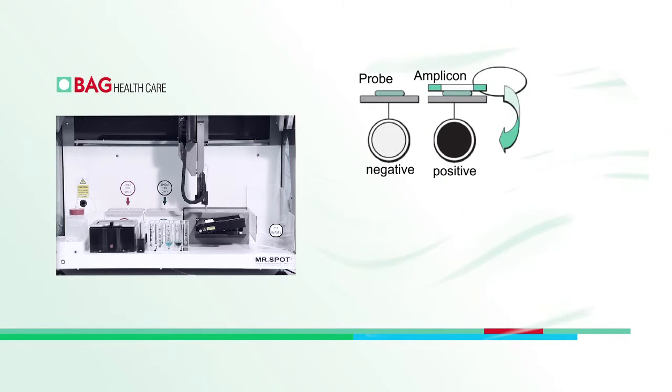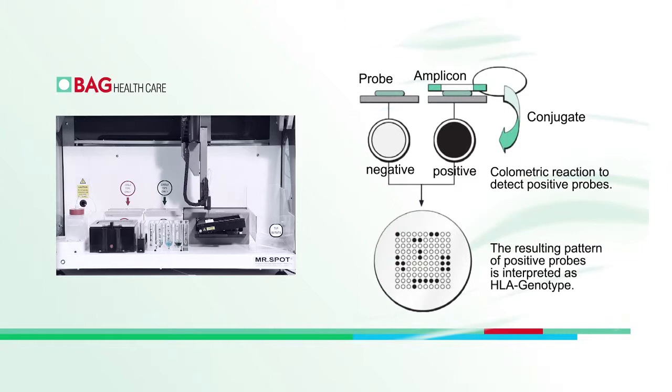If the sequence of the amplicon is complementary to the sequence of a probe, hybridization will occur. The conjugate can then bond and trigger a color reaction in this position. The resulting pattern of positive probes is interpreted as HLA genotype.